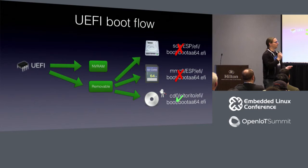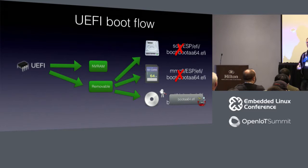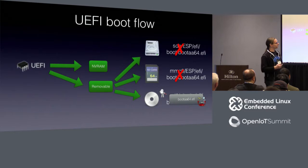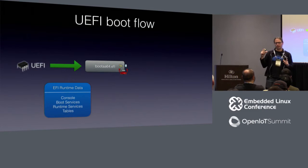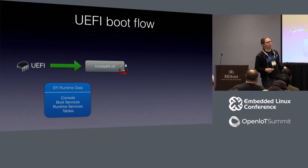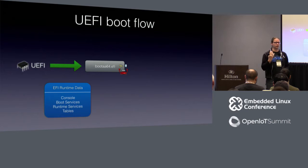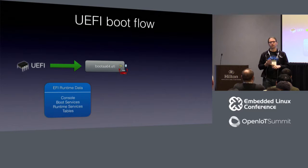Next step is we are booting our payload — this is the new amazing beta-type logo of GRUB. So we're booting our payload, loading it from storage. That payload receives a thing called EFI runtime data — it's basically just a pointer, similar to how Linux gets the device tree as a pointer when you boot it. In an EFI world, the EFI payload gets the EFI runtime data as a reference it can use to figure out what it should do.